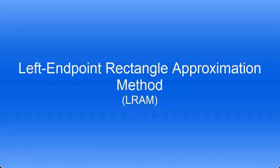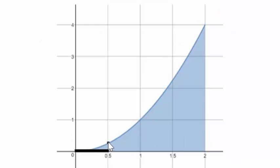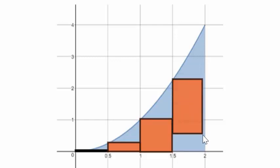Let's start by looking at the Left Endpoint Rectangle Approximation Method, otherwise known as LRAM. The rectangles are defined by the left side of each interval. The first rectangle is defined by the height at 0, which is a very short rectangle. The second rectangle is defined by the function's height at 0.5. The third rectangle is defined by the function's height at 1. And the fourth rectangle is defined by the function's height at 1.5.